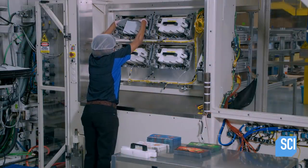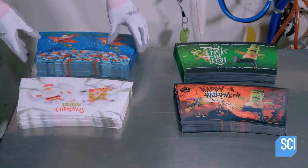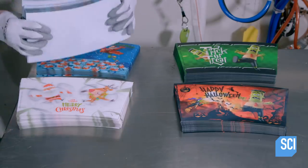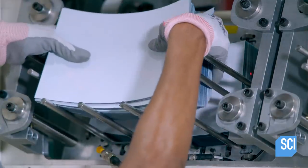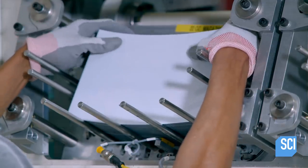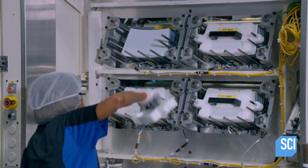Next, an operator loads the stacks of 3D labels into the cup forming machine. This machine will process four different labels onto cups at once, each with a different 3D image.